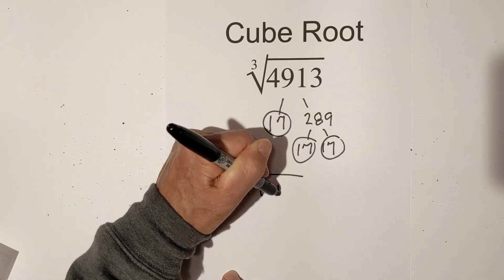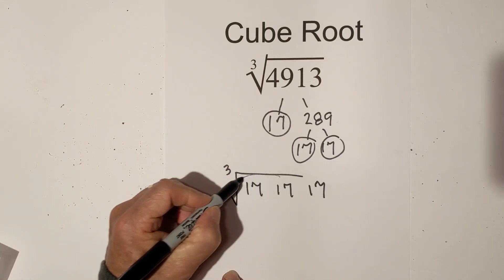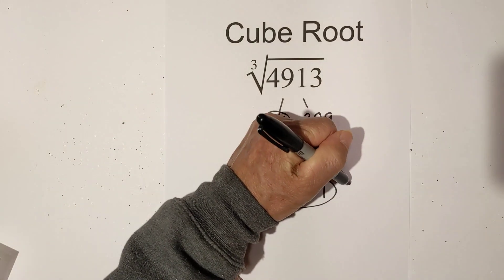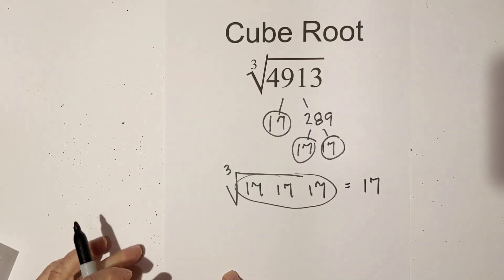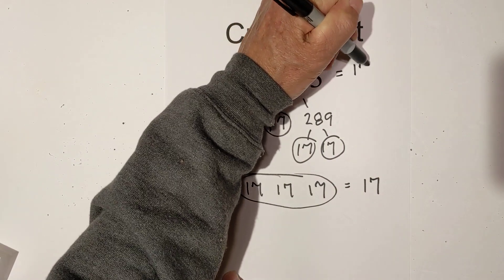So I have 17, 17, and 17. If you have groups of 3, you can pull them out from underneath, so I will pull out 17. The cube root of 4913 is 17.